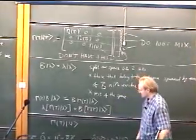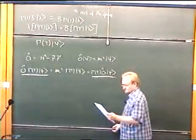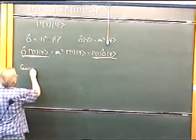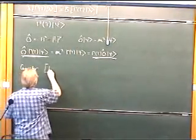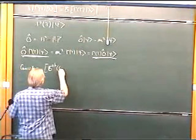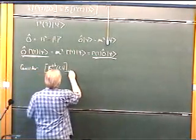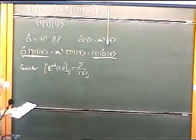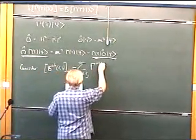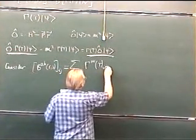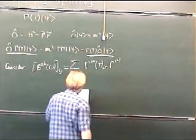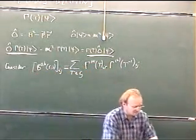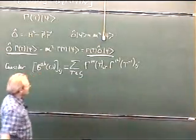I'm going to ask you to consider the following matrix. Consider B_ABRS_IJ, and this is defined to be equal to a sum over all of the group elements: Gamma_A of T, I, R times Gamma_B of T to the minus one, S, J. This is a busy formula, so let's think about it.